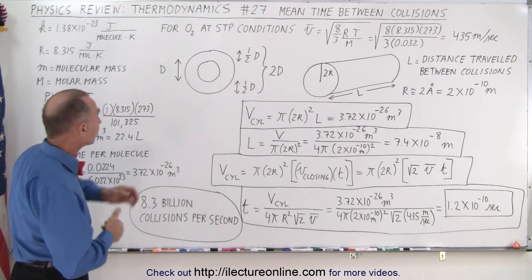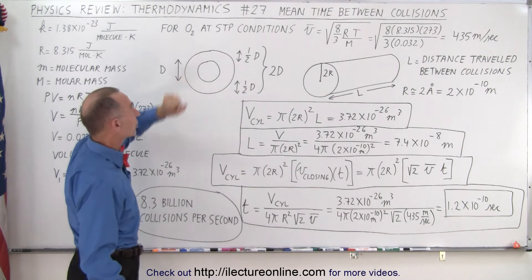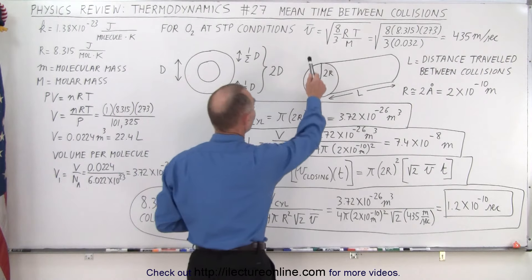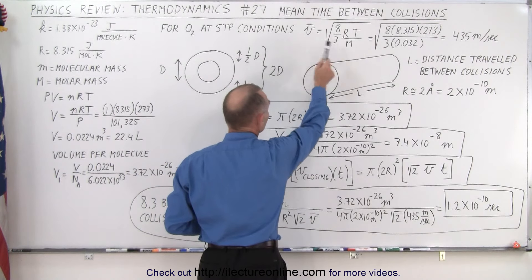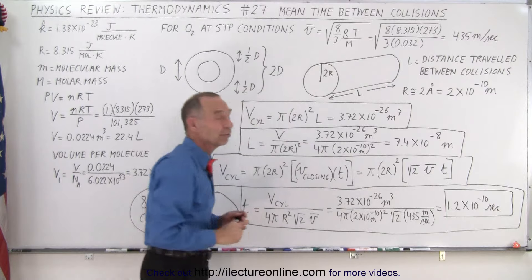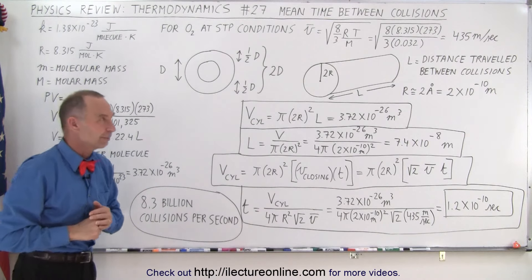So oxygen in the atmosphere is a diatomic molecule and at the STP conditions it has the average velocity equal to this equation, ends up being about 435 meters per second.